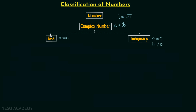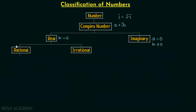Now we will focus on real numbers. Real numbers can be classified into two types: rational and irrational, and these two types are very important. Rational numbers are those numbers which can be expressed in the form p over q, where q is not equal to zero. Here p and q are both integers, so we have the ratio of two integers in which the denominator is non-zero.